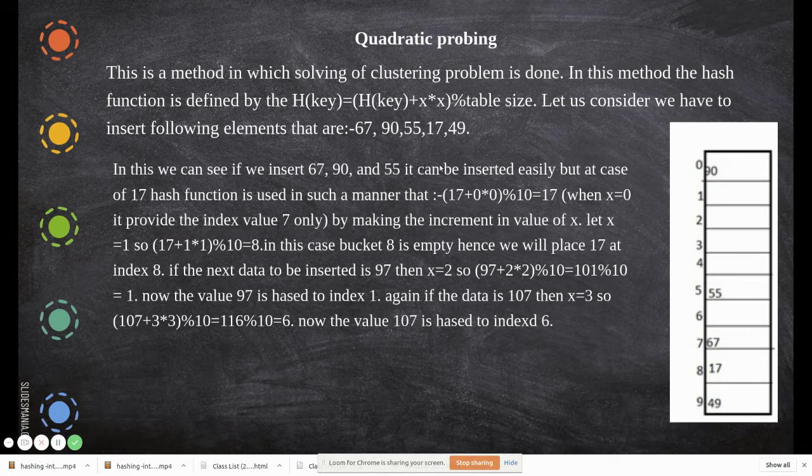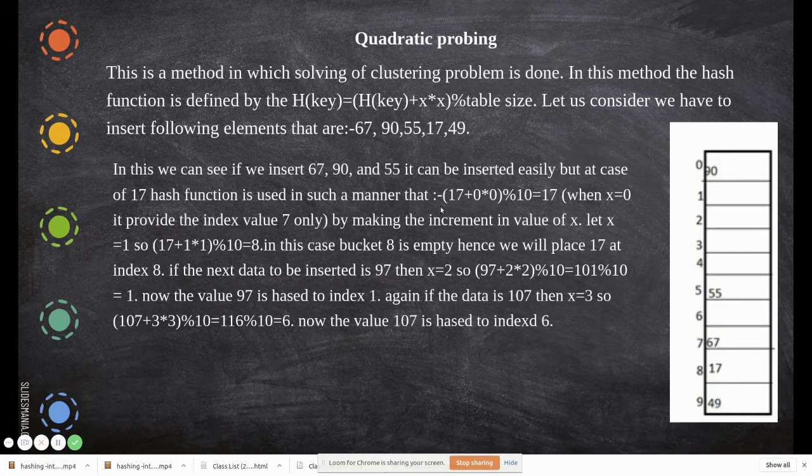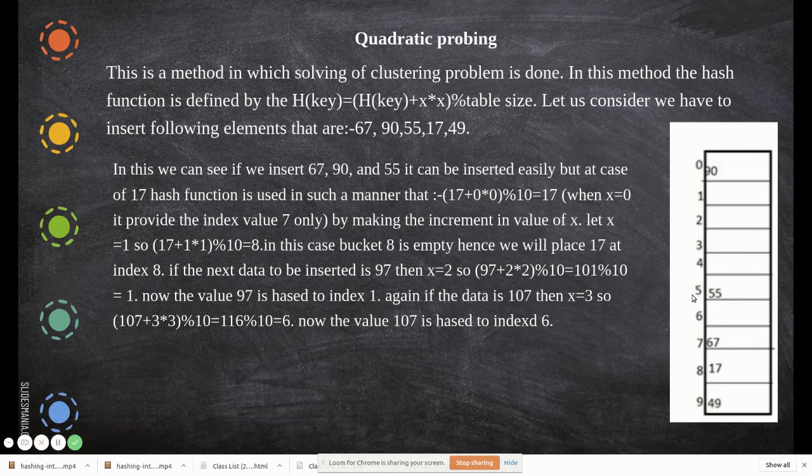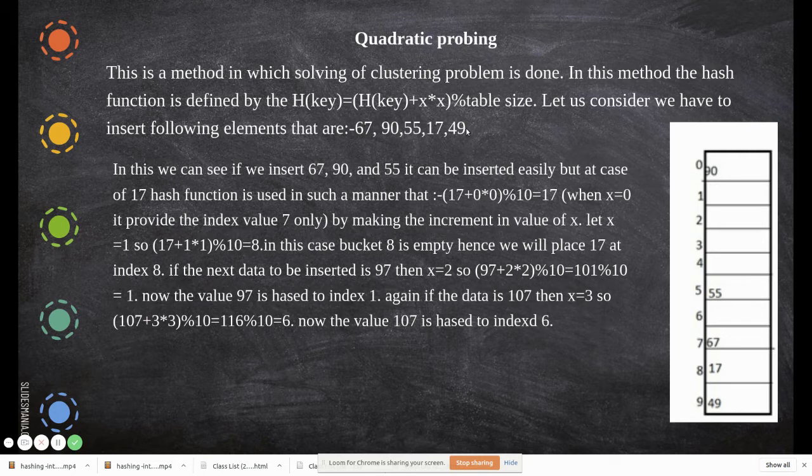First 67 is placed at 7, then 90. 90 mod 10 is 0, so it's placed at index 0. Then 55 mod 10 is 5, so 55 is placed at 5. Then comes 17, which again has the same hash location.